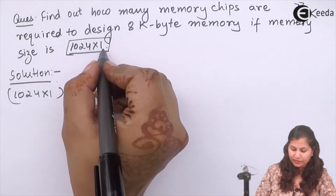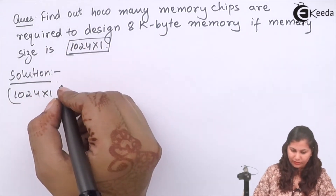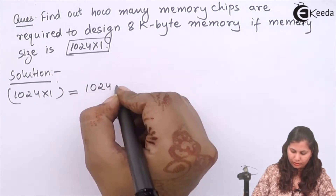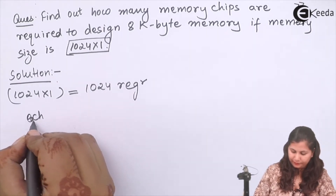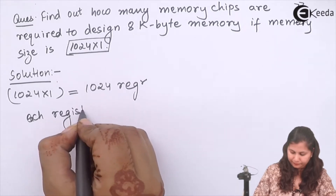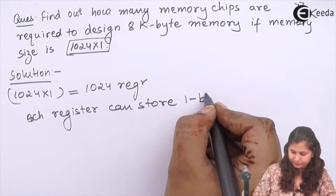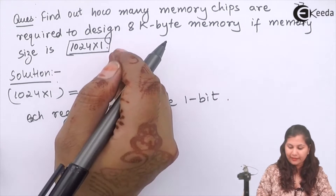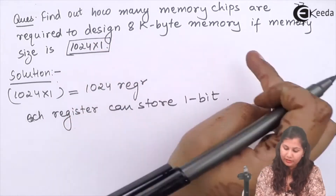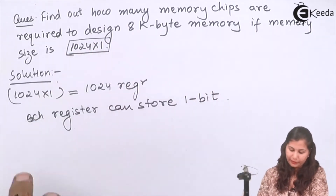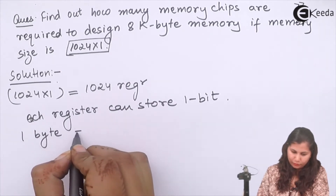It means 1 bit is stored in 1 register. So we are having 1024 registers, and each register can store 1 bit. This 1024 x 1 means we have a total of 1024 bits, and every memory cell is storing 1 bit, so in total we are having 1024 registers.